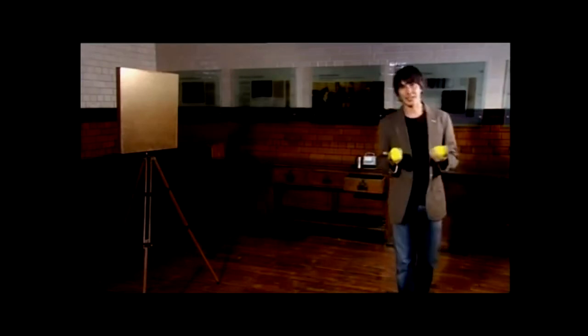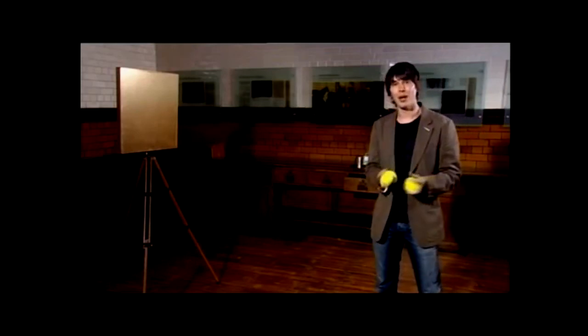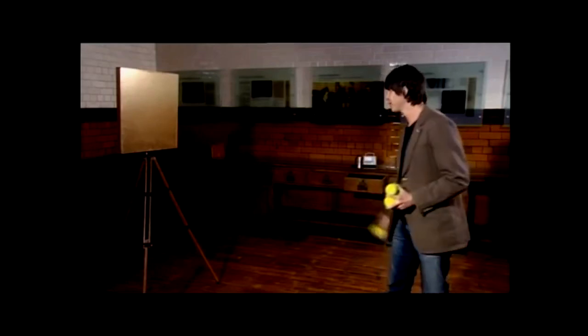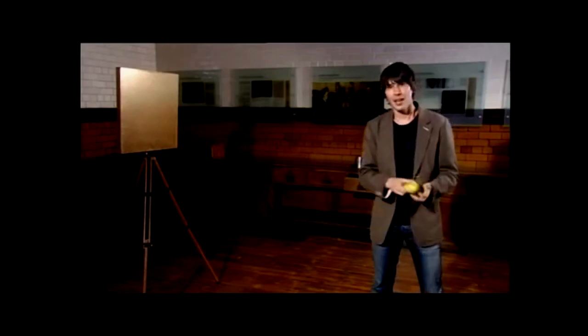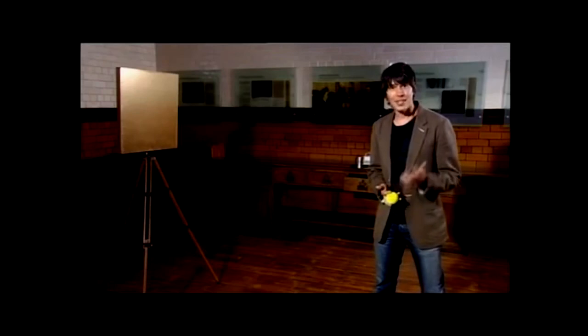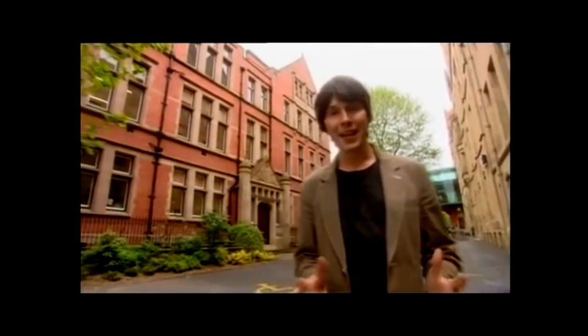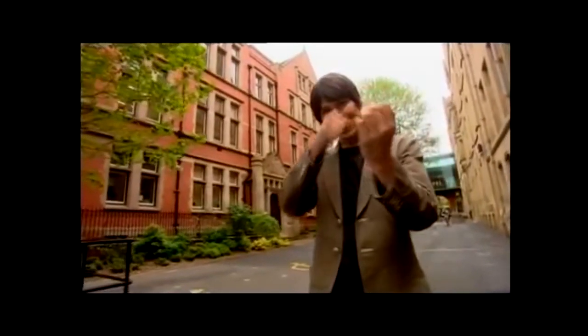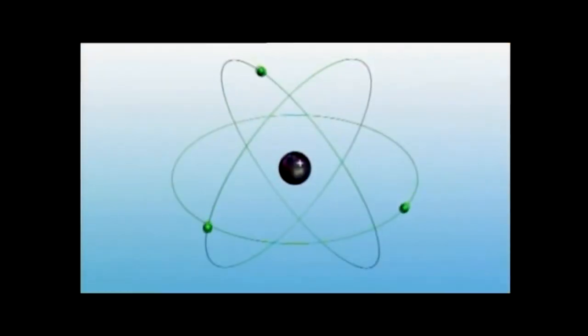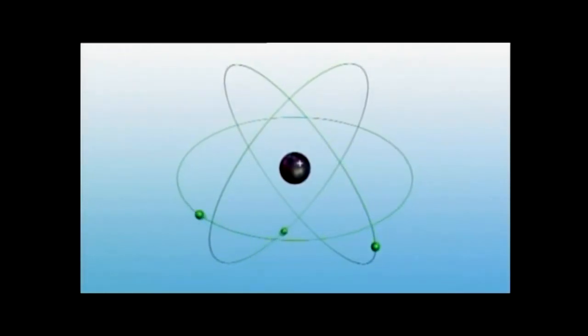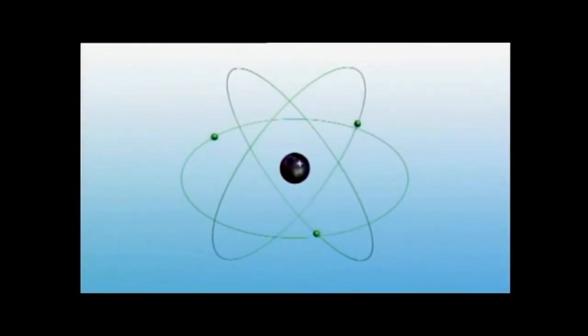If the atom were as Thomson suggested, an amorphous blob, you'd expect the alpha particles to pass right through. And that's indeed what happened to most of them. But to their surprise, they found that around one in 8,000 bounced right back. After two years of puzzling, Rutherford realized that in order for the alpha particles to bounce back, they must hit something small and dense. So his new model of the atom was like the solar system, with all the mass concentrated at the center and the electrons orbiting like planets around the sun. Today we know that quantum mechanics tells us that electrons reside in distinct shells around the nucleus.